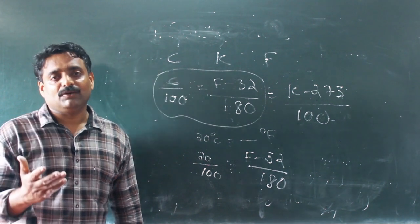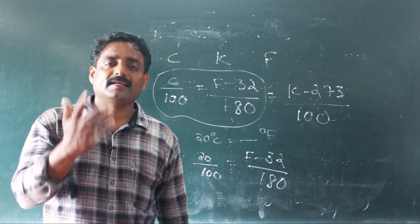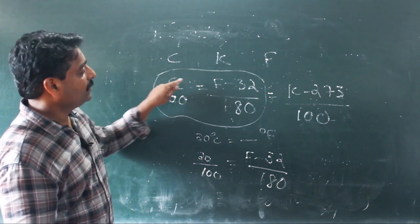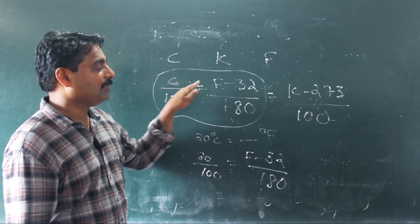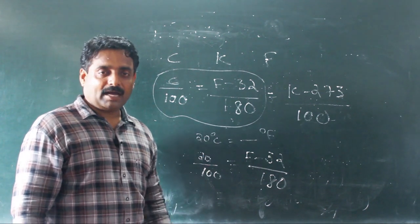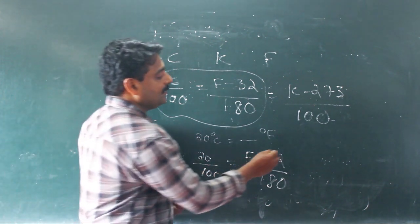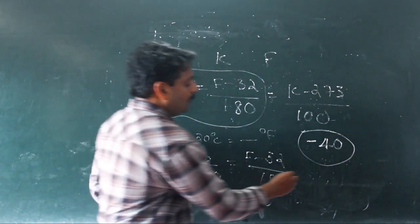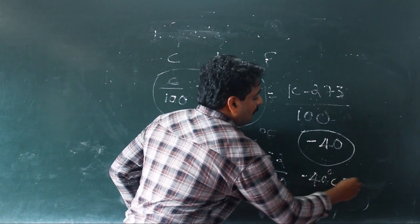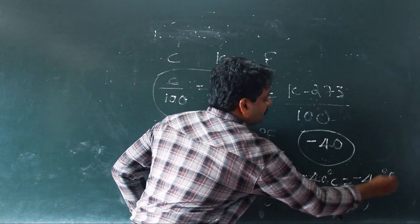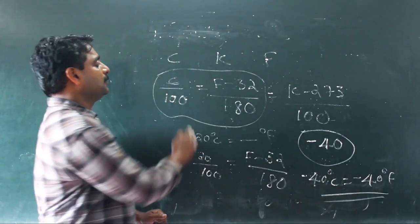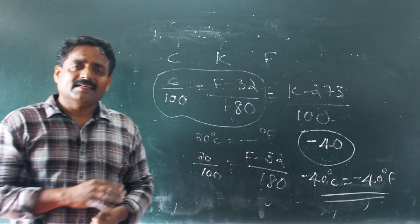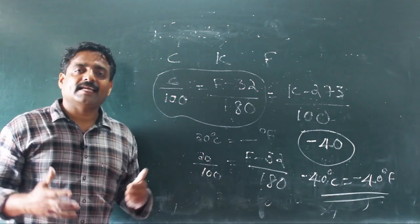The value of temperature at which Celsius scale and Fahrenheit scale are the same: minus 40 degree Celsius is equal to minus 40 degree Fahrenheit. This is the relation between Celsius and Fahrenheit.